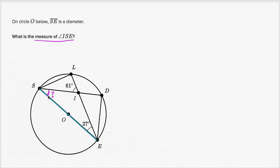I encourage you to pause the video and see if you can work through it yourself. There are a bunch of ways we can tackle this problem. The first one that jumps out at me is there are a bunch of triangles here, and we can use the fact that the interior angles of a triangle add up to 180 degrees. We can look at this triangle right over here, and we know one of the angles already — this angle has a measure of 27 degrees.